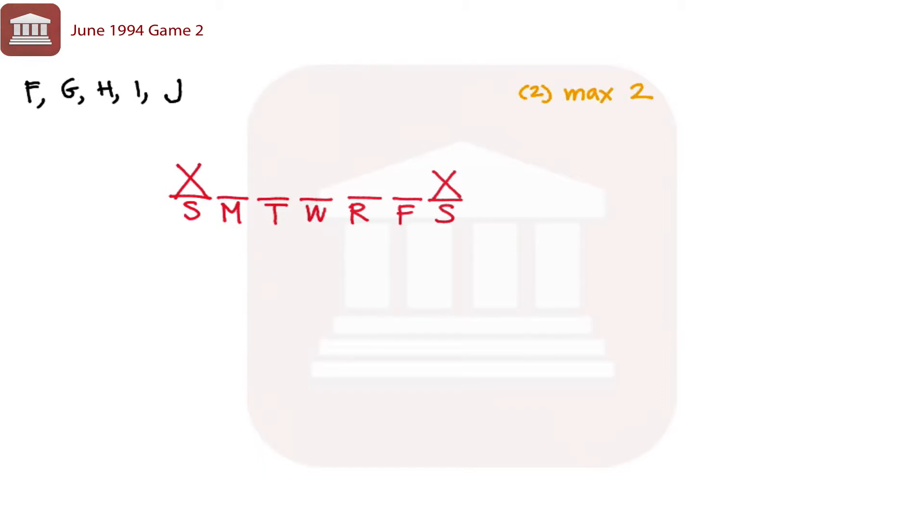Rule number three, no firefighter works on two consecutive days. So that means that we don't have F, F, G, G, H, H, I, I, or J, J.